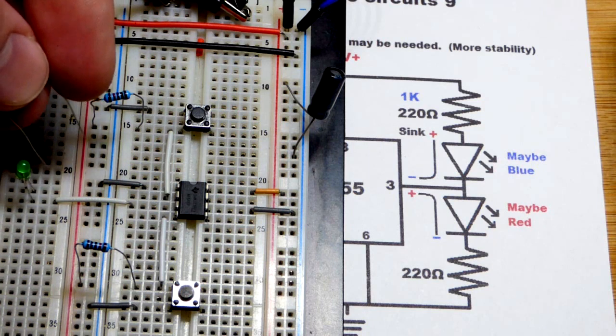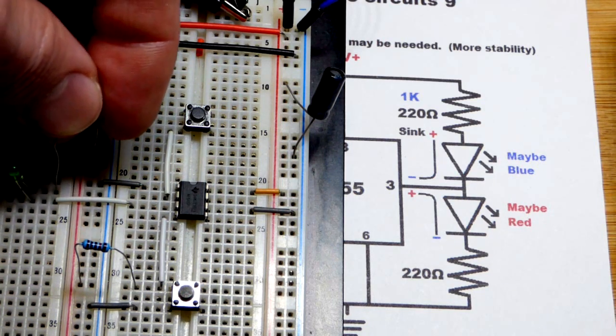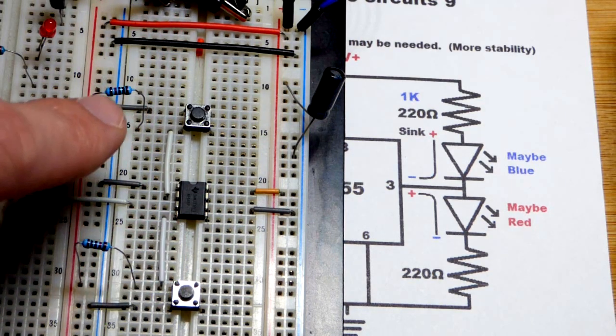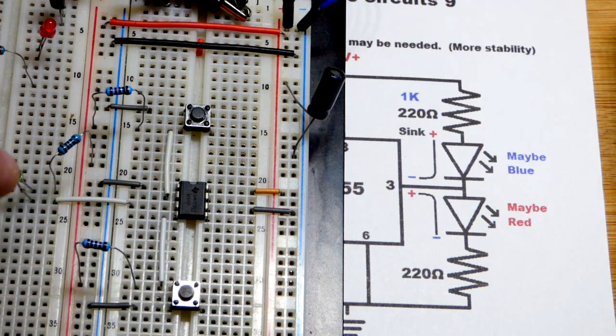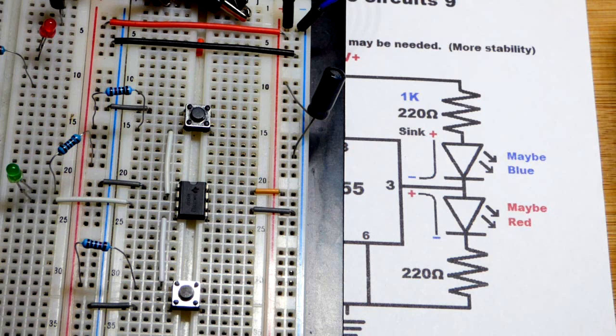So I realize it's kind of hard to see. I think I'll just remove the red LED for now. So I'm going to put that to the positive rail right there. And so when the output is connected to the negative rail, then we will have a current path through the resistor and the LED and then to ground through the 555 timer.